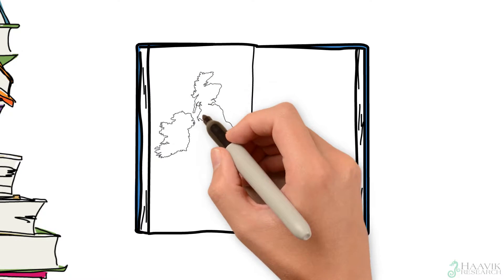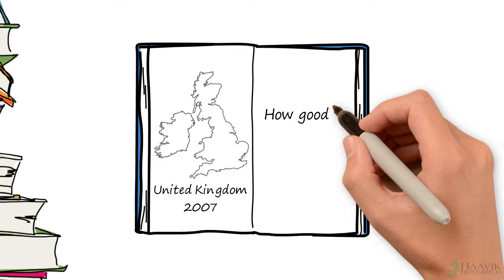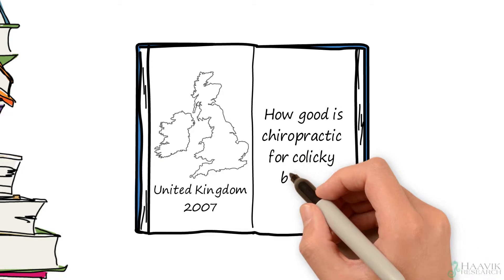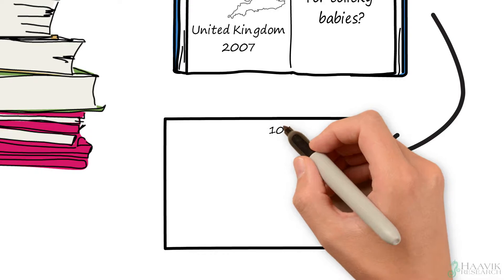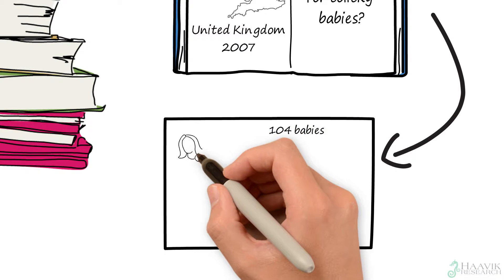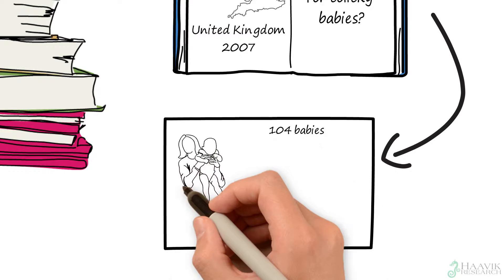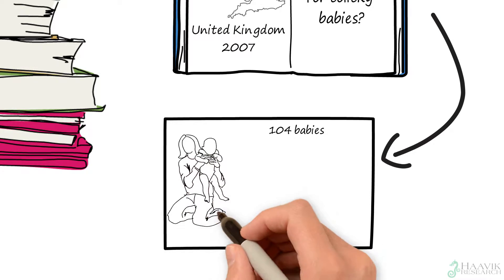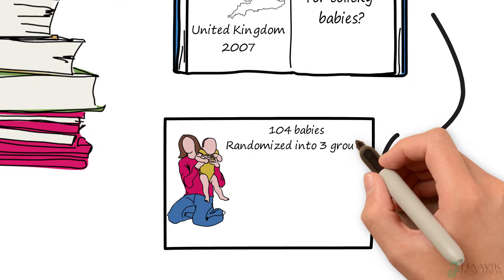Conducted in the United Kingdom in 2007, the researchers wanted to find out how effective chiropractic care was for babies who were experiencing unexplained crying. 104 babies, 8 weeks old or younger, were able to participate in this study between October 2007 and November 2009 at a chiropractic teaching clinic. They were randomized into three groups.